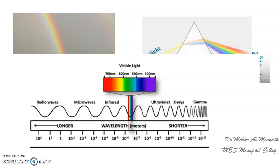The collection of different electromagnetic radiations of different wavelengths together is called the electromagnetic spectrum. The electromagnetic spectrum is the distribution of electromagnetic waves according to their frequencies or wavelengths into different regions.